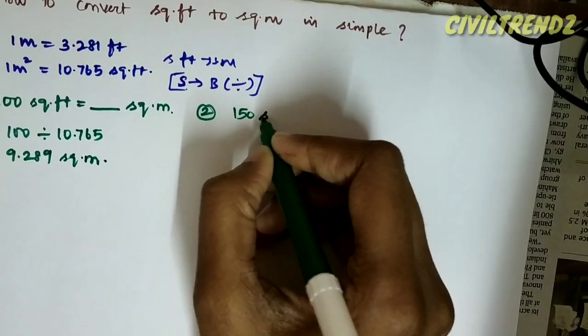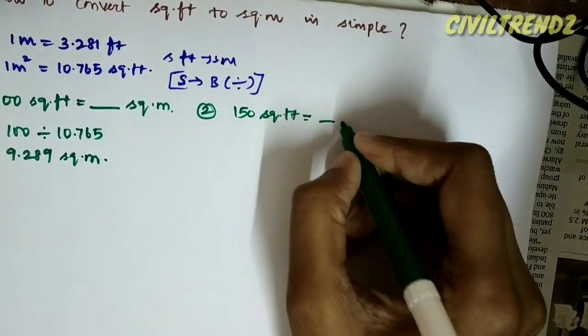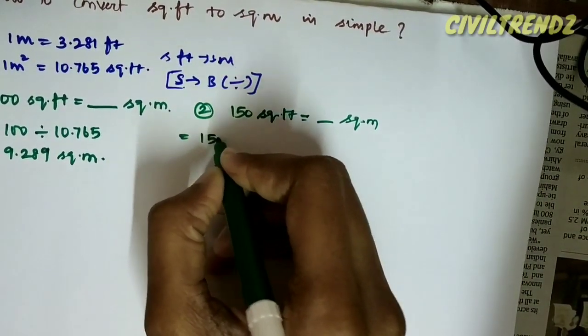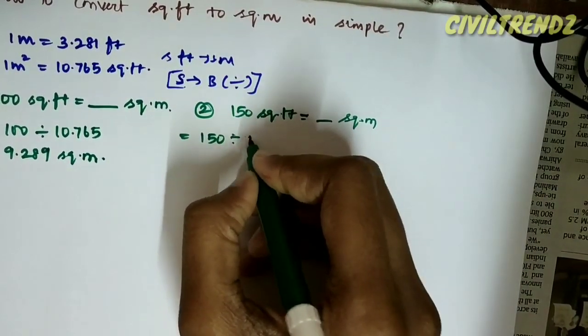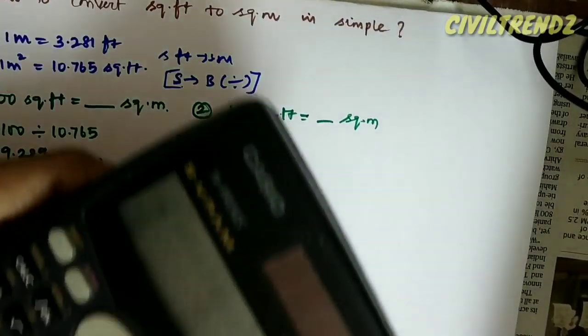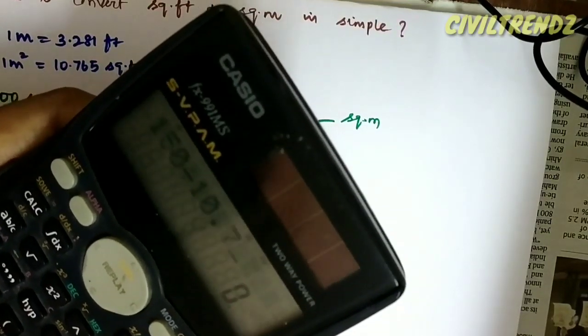Second problem. 150 square feet to square meter. Convert. Find. 150 divided by 10.765.